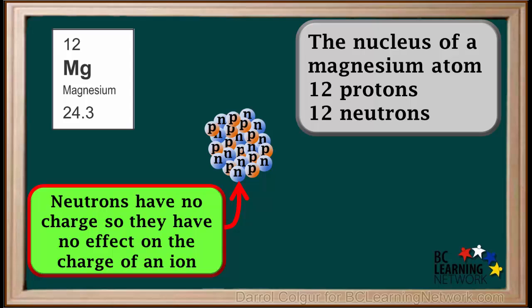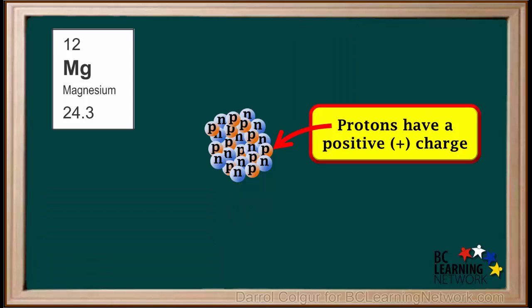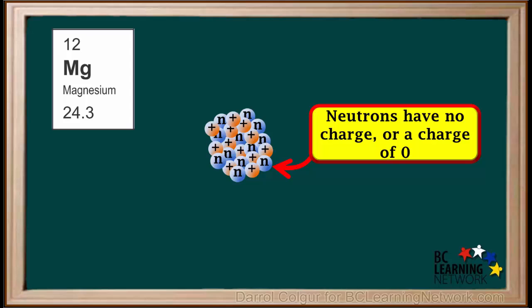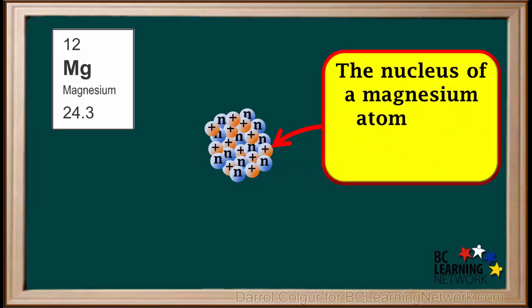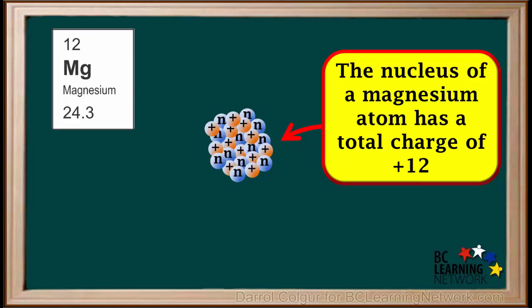Only protons and electrons determine ion charges. All protons have a positive charge, so we'll change the p's in our diagram to positive charges. Because neutrons have no charge, we'll just leave these with the letter N. There are 12 positively charged protons in a magnesium nucleus, so the nucleus of a magnesium atom has a total charge of positive 12.